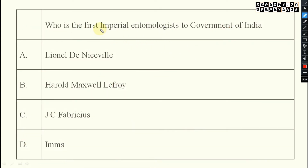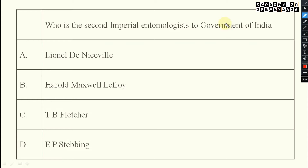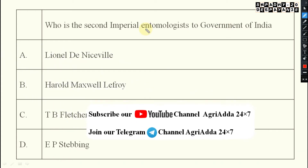The next question: who is the first imperial entomologist to the Government of India? The answer is H.M. Lefroy — Harold Maxwell Lefroy. He is the first imperial entomologist to the Government of India, appointed in the year 1903. This year is also important and may come in the exam.